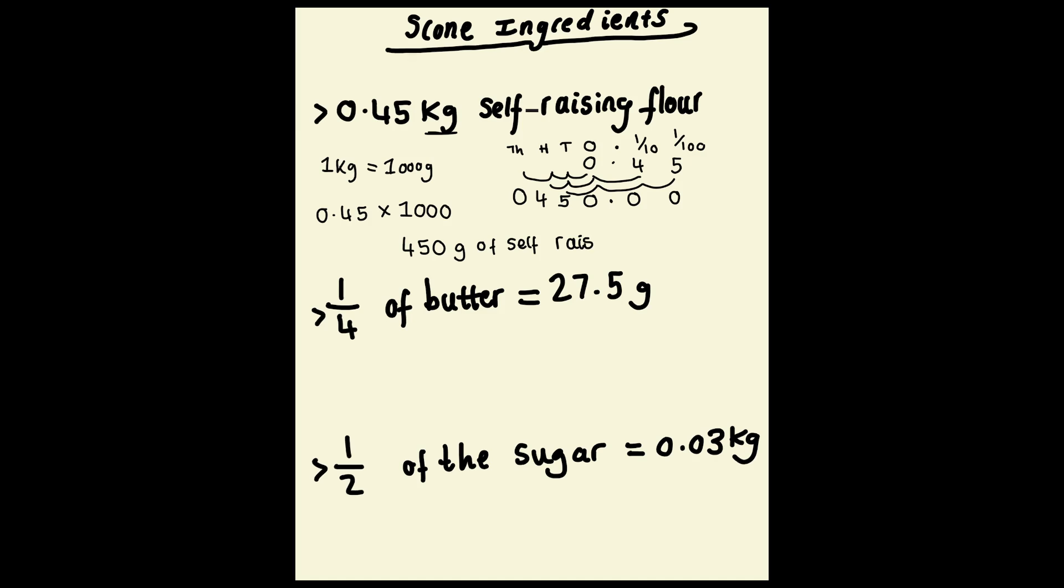So I can see that one quarter of butter is equal to 27.5 grams, but we need to work out how much butter we need in total. So we need to work out four quarters of butter, therefore we need to do 27.5 times 4. You can do this in a variety of ways.